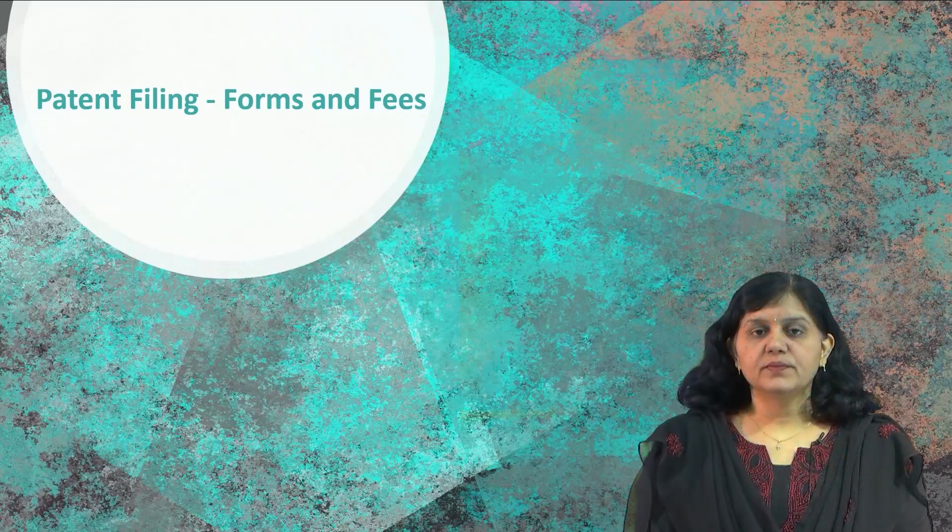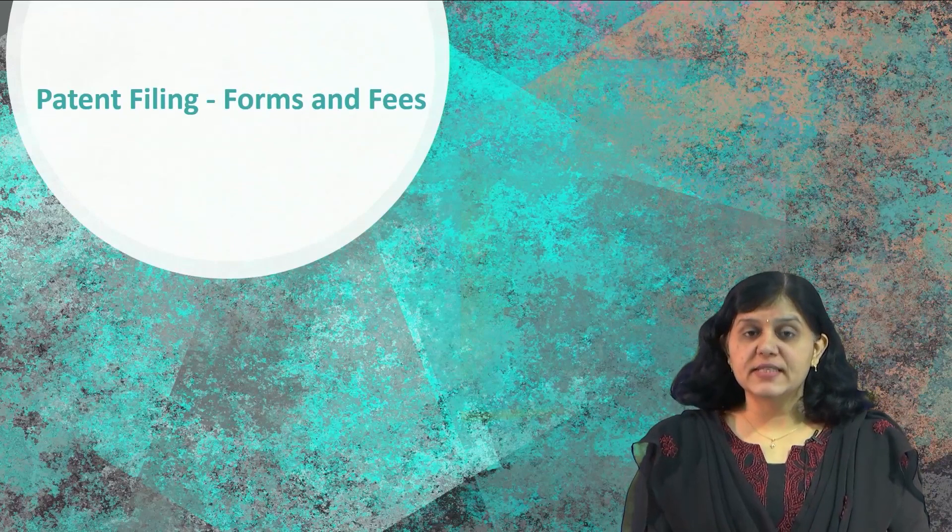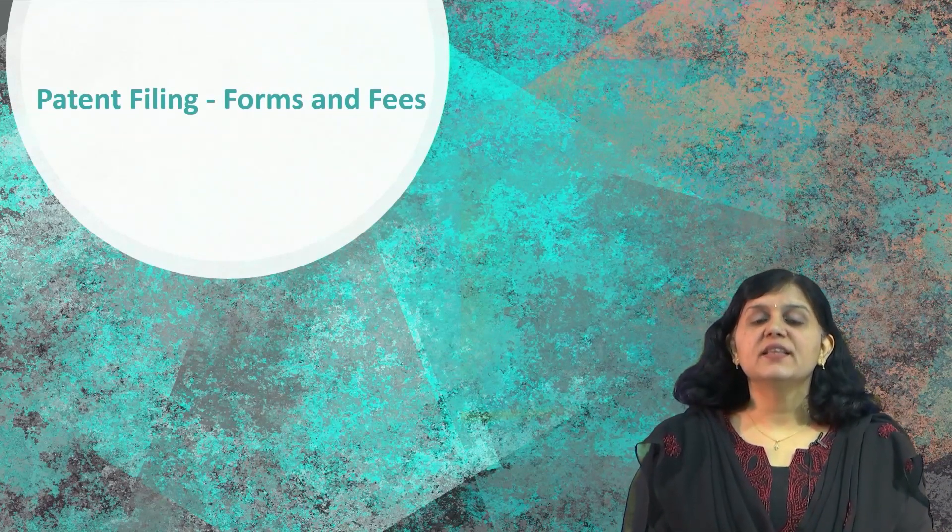To sum up: the inventor or applicant should first make the patent attorney aware about their business situation, including market, cash inflows, product movements, etc. Secondly, they should disclose the invention in completeness to the patent attorney. Thirdly, they should not edit the patent claims. With this, we come to the end of this session on Forms and Fees. See you in the next session. Thank you.